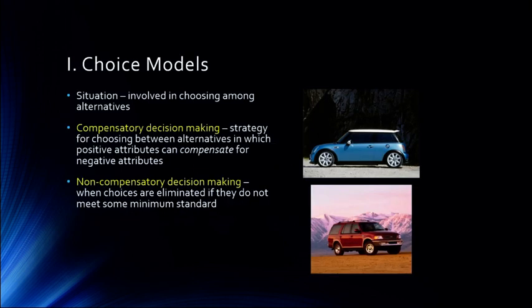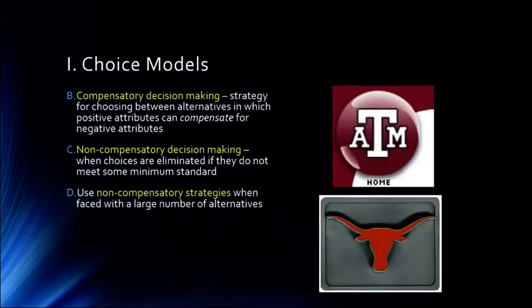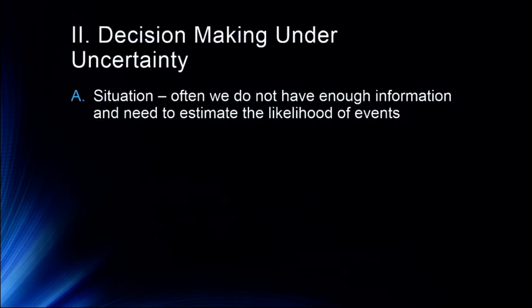Things like cars and where we go to school are certainly situations in which we might use these different kinds of decision-making strategies. You might decide you don't want a college further than 500 miles from home, or not closer than 500 miles — both are potential non-compensatory criteria. That's a choice model.